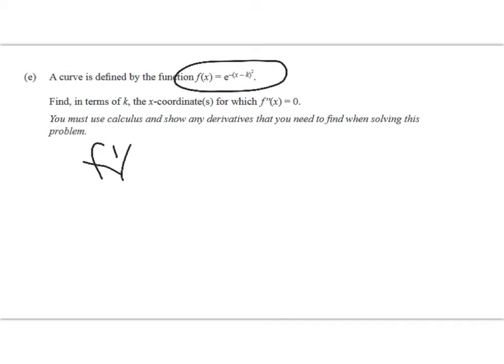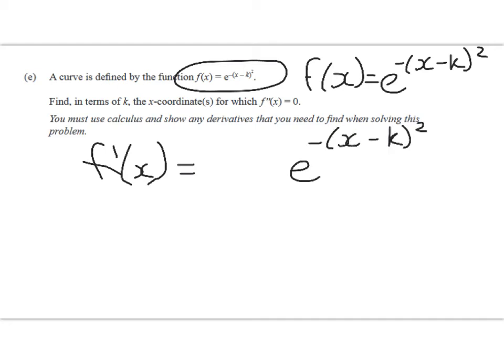So differentiating that, what do we get? Well, we'll write that out a bit bigger. f(x) is e^(-(x-k)^2). So differentiating, it's going to be, it's an exponential, so it will keep the exponential. And now we have to find the derivative of the inside function. So that's going to be -2(x - k). So that's step one. And that's just the chain rule.